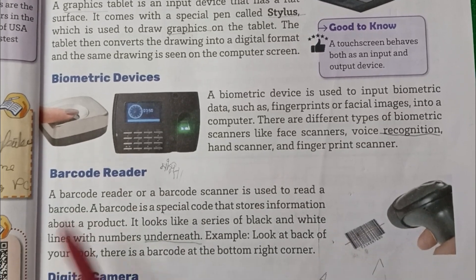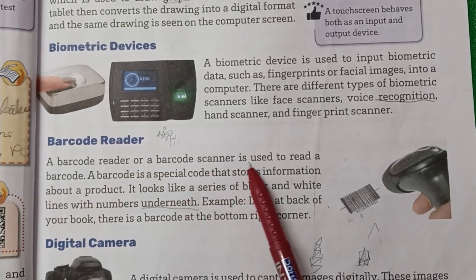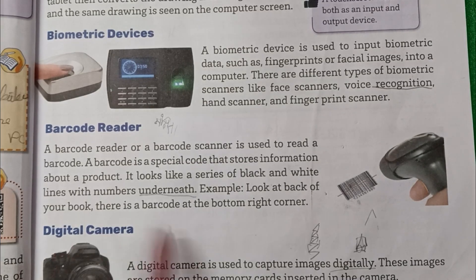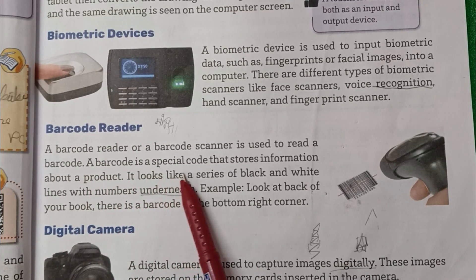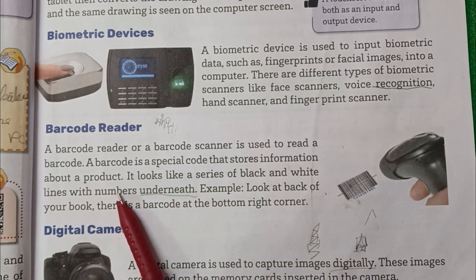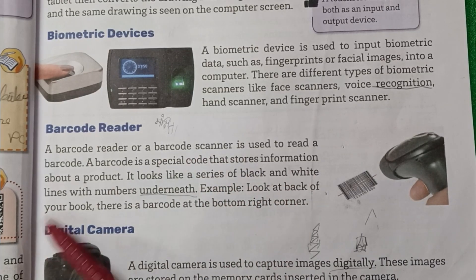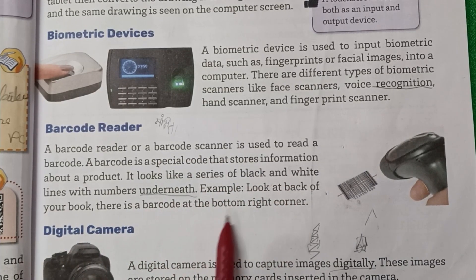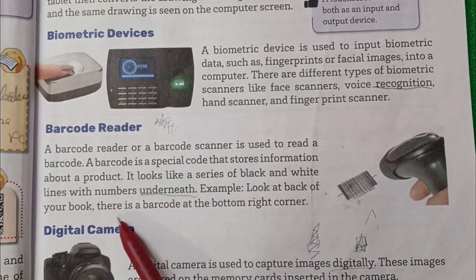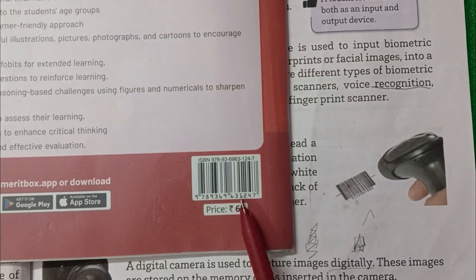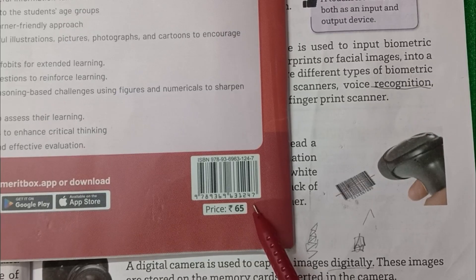Barcode Reader. A Barcode Reader or Barcode Scanner is used to read a barcode. Barcode ek special code hota hai jo kisi product ke baare mein information store karta hai. It looks like a series of black and white lines with numbers underneath. For example, look at the back of your book — there is a barcode at the bottom right corner. Ise read karne ke liye barcode scanner ya barcode reader ka use hota hai.